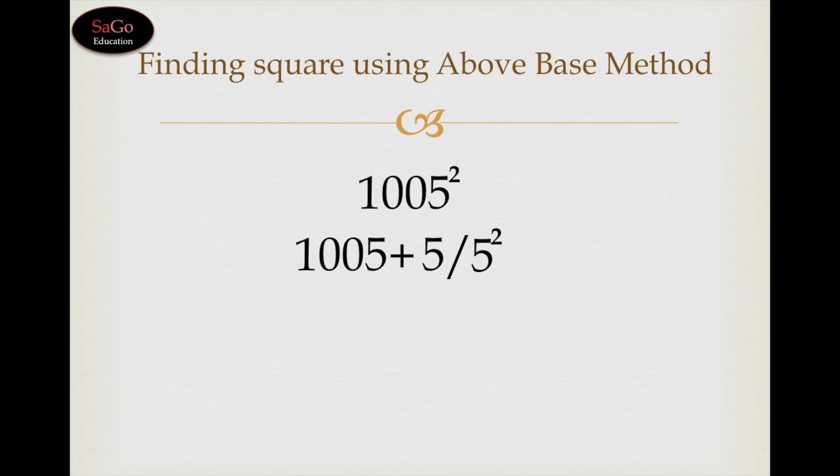1005 plus 5 is 1010, write down 1010, put a slash. Square of 5 is 25 but we will write 025 because the base we are considering here is 1000 and there are three zeros in 1000.